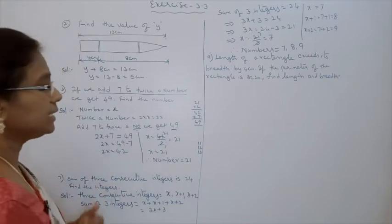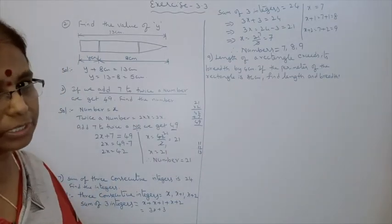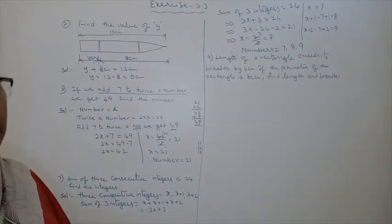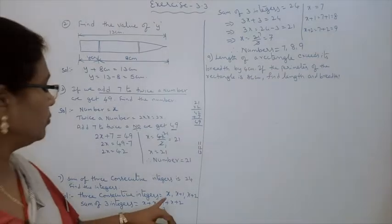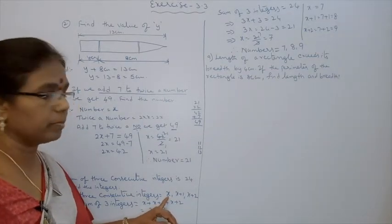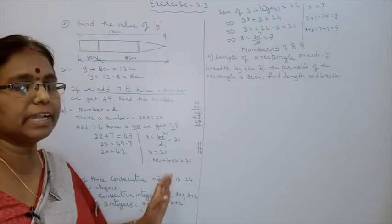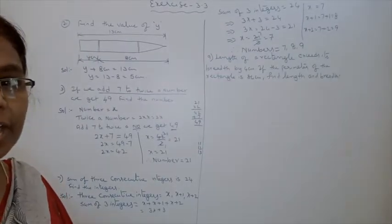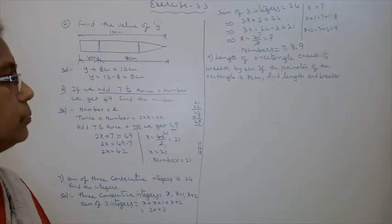What are 3 consecutive integers? Continuation of 3 numbers — the starting number can be anything, like 20, 21, 22 or 25, 26, 27. We assume the first number as x. Then the next number: if you add 1 you get the next number. The third number: if you add 2 you get the third number. So x, x plus 1, x plus 2.